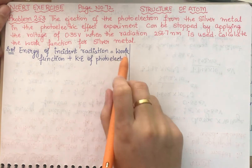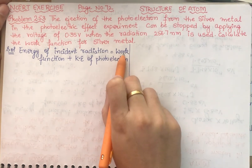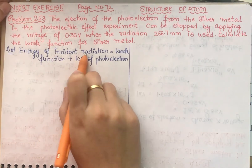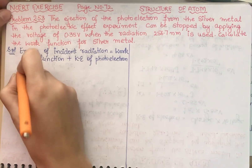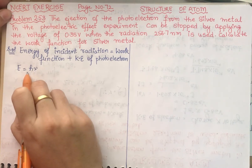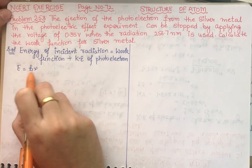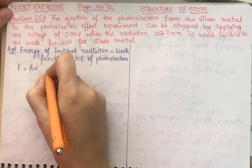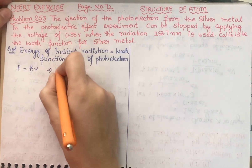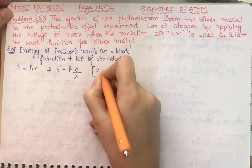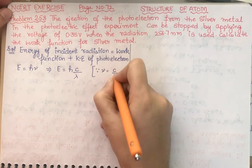The work function is the minimum amount of energy required to eject an electron from the silver surface. For the energy of incident radiation, we use E = hν. Since frequency is not given but wavelength is given, we convert: E = hc/λ, where ν = c/λ.